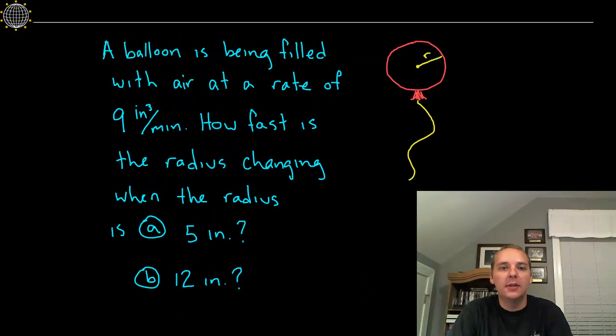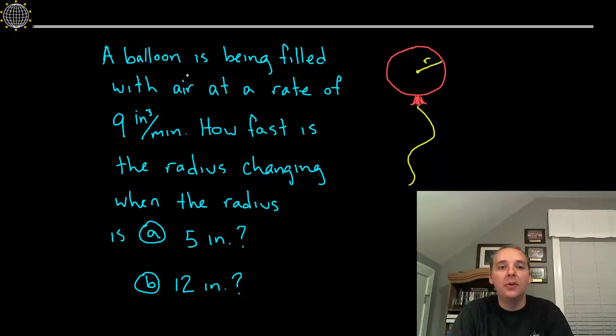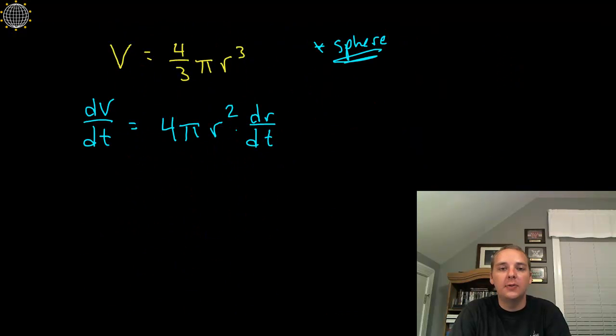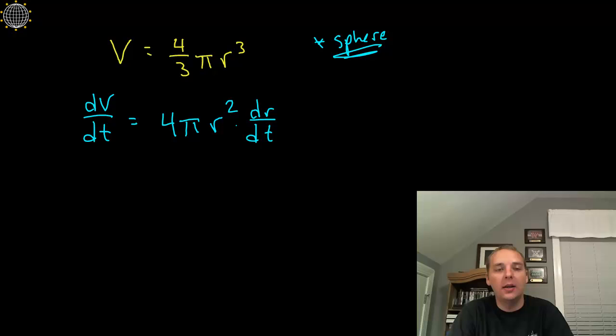Okay, now let's see what do they tell us, well they say the balloon is being filled with air at a rate, hint hint, rate of nine cubic inches per minute. So something's nine. So look at this formula, who's nine? Well it's this guy, it's the change in volume over change in time, nine cubic inches every minute.